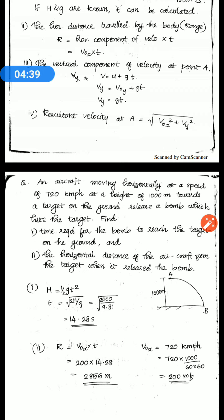Next, we find the horizontal distance of the aircraft. The horizontal distance equation is: horizontal component of velocity times time. Time is 14.28 seconds. v₀ₓ is the aircraft speed — moving horizontally at 120 km per hour, which needs to be converted to meters per second by dividing by 3600.